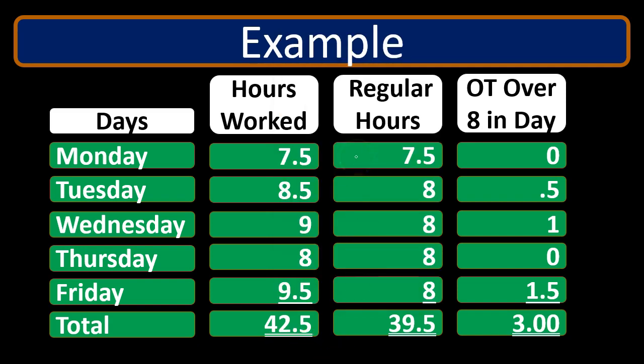We're applying an eight-hours-per-day limit here — anything over eight hours a day is paid at time and a half. If instead we're using a 40-hour work week rule, we'd simply take the 42.5 total hours minus 40 to get 2.5 hours of overtime. So you need to be aware of what the overtime regulations are. Companies must comply with minimum federal and state regulations, but they can also choose to pay overtime beyond those requirements.